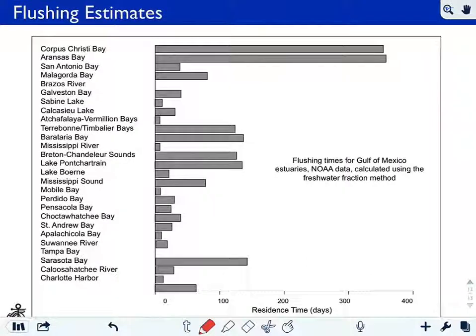Some flushing estimates here for various embayments. These were done using numerical models by NOAA. But you see the residence time varies considerably from the order of a few weeks for these estuaries here up to the order of a year for these larger scale estuaries like Corpus Christi Bay. These are all New Mexico area harbors.